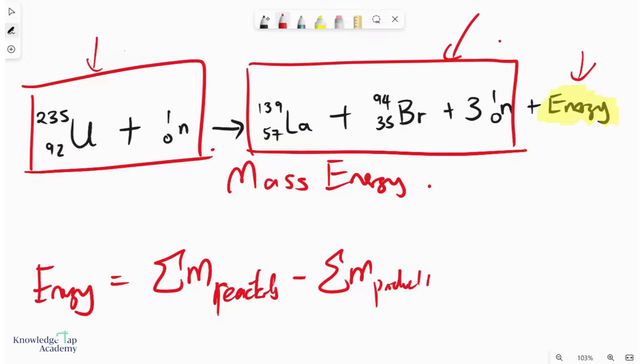The difference between those, multiplied by c squared to convert that into energy, will be this over here.